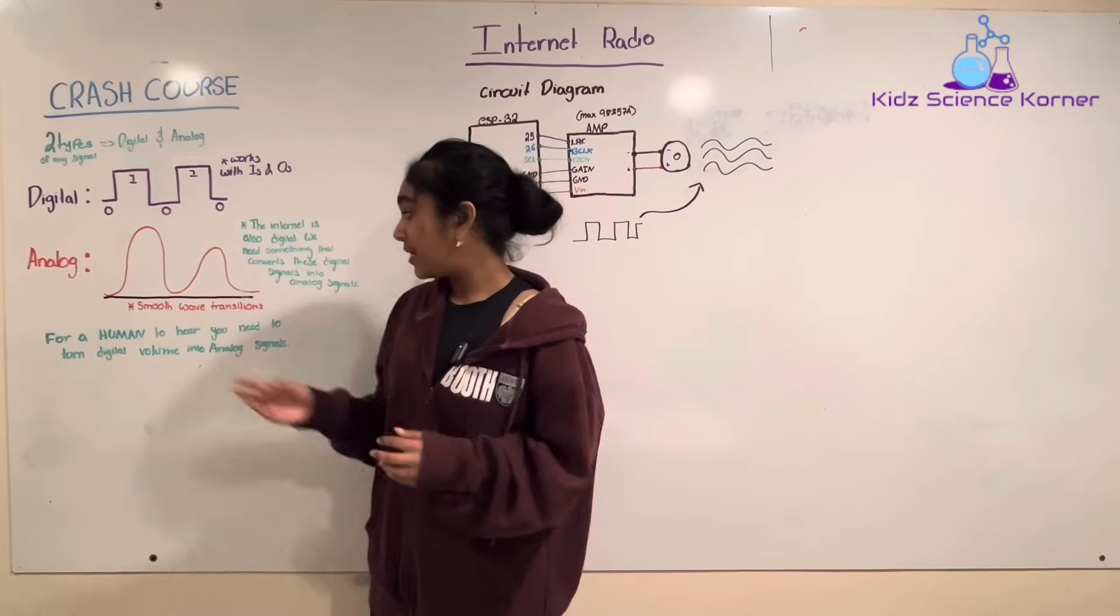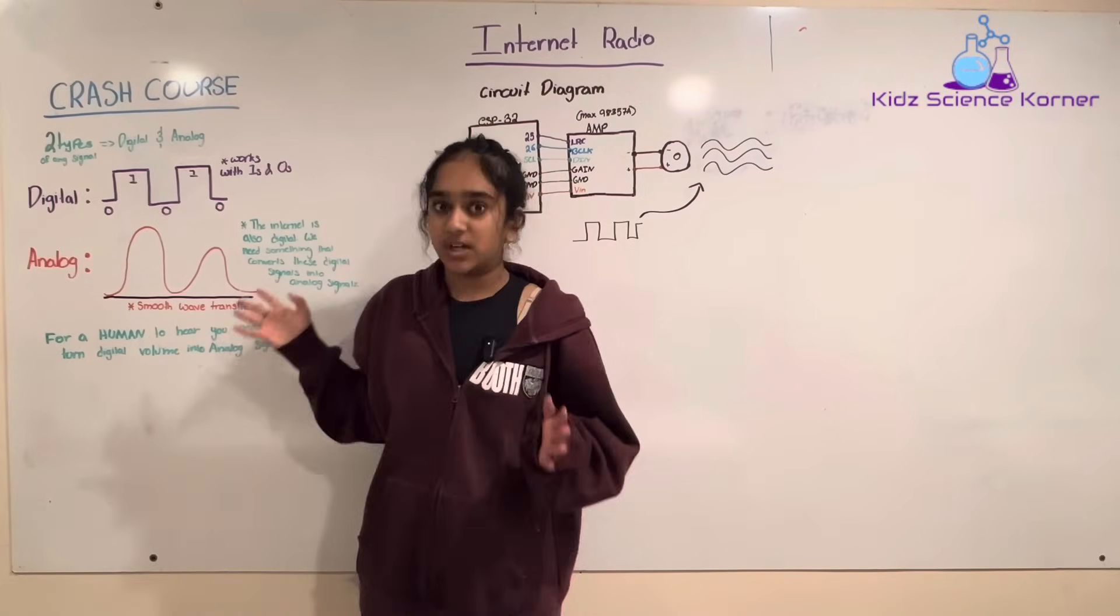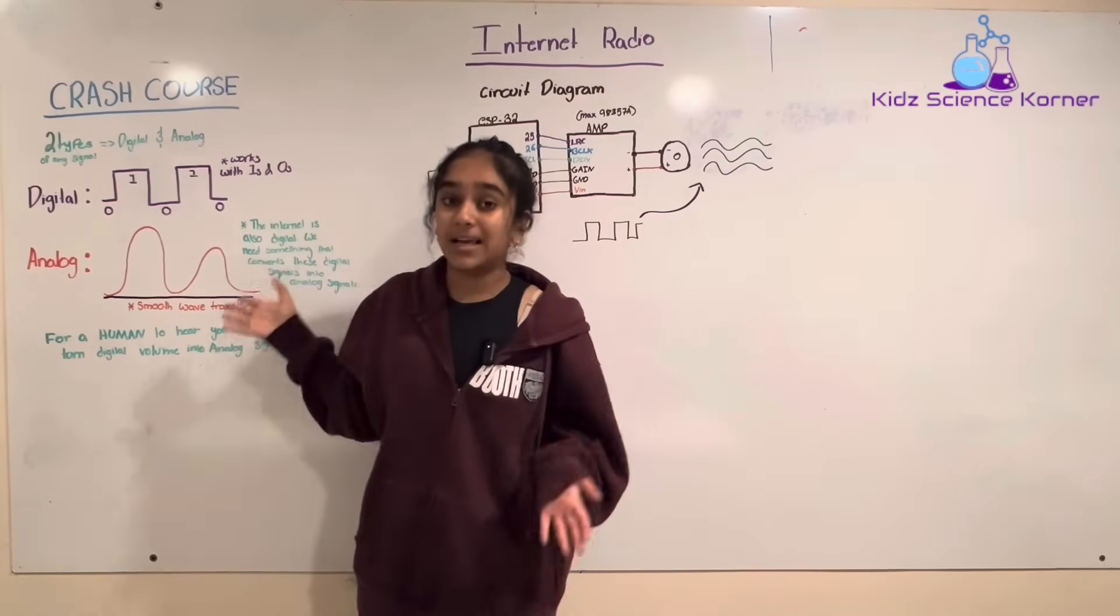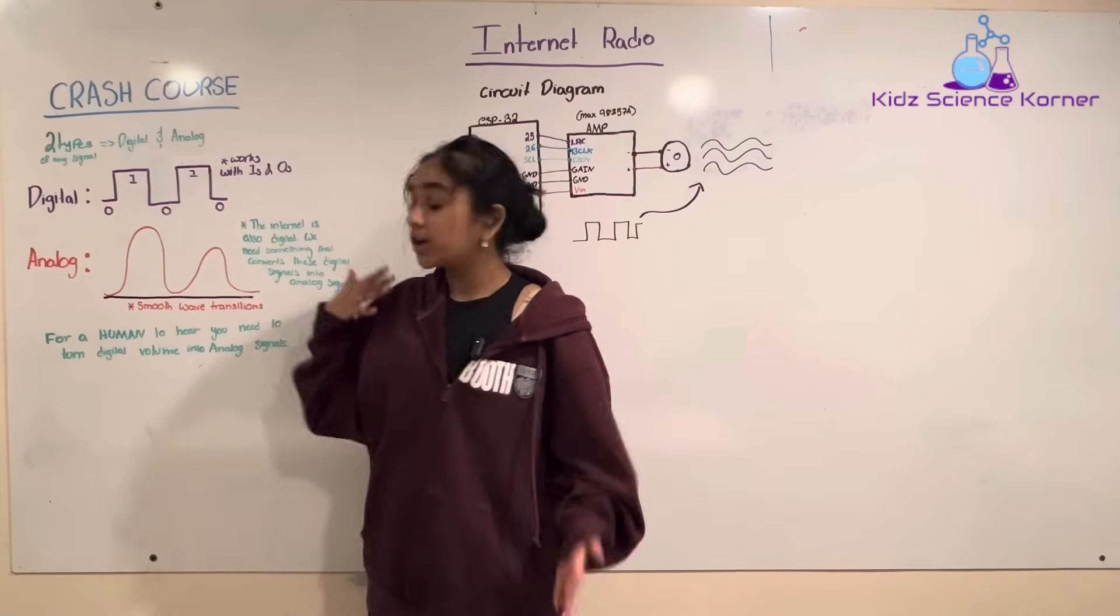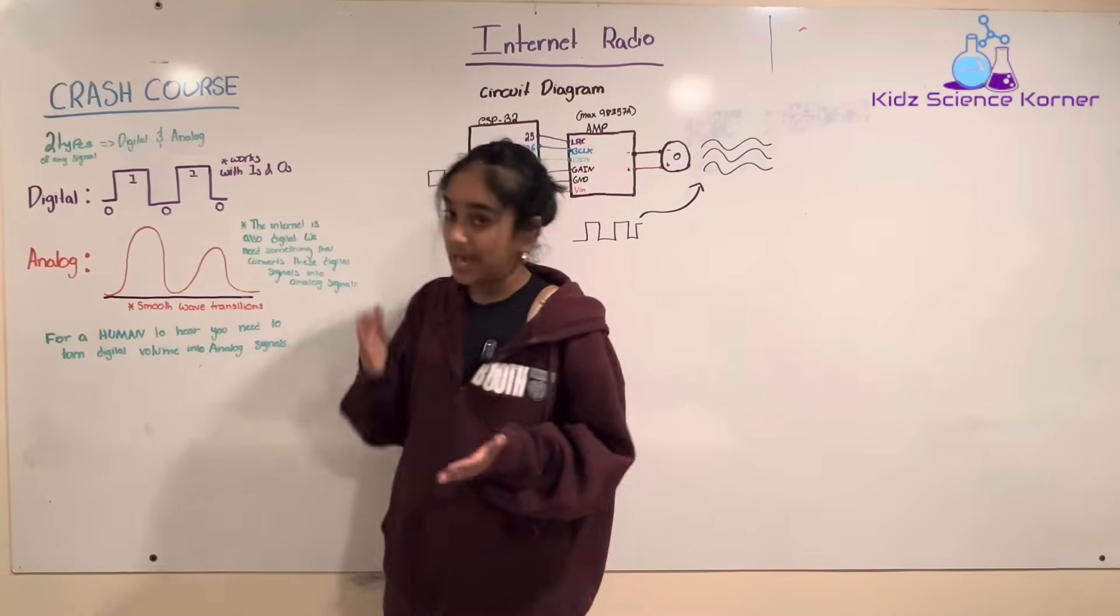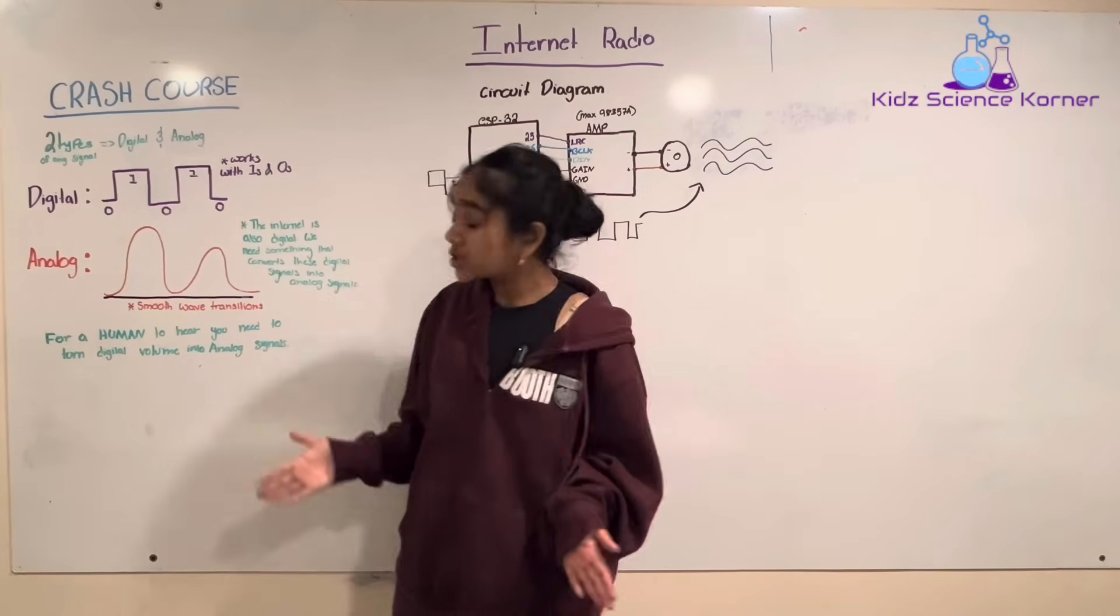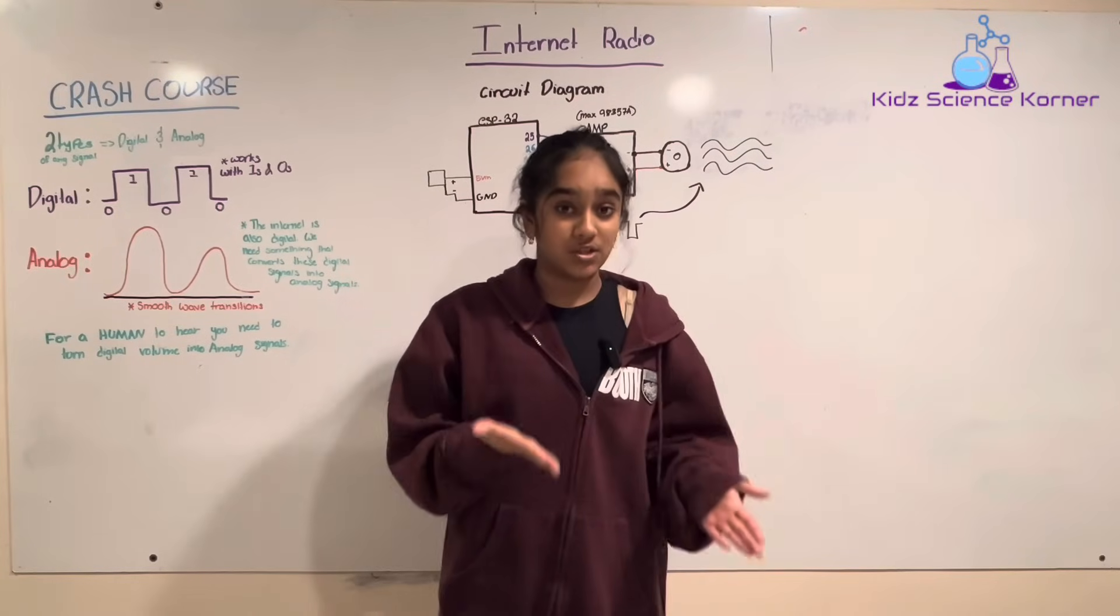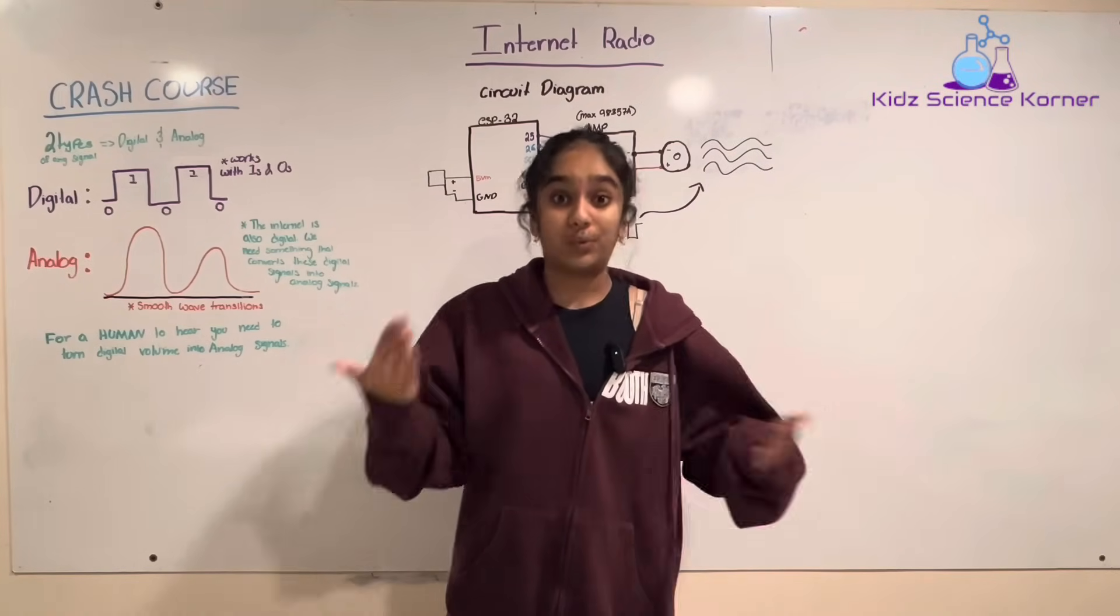And then there's analog signals. This is a smooth wave transition, as you can see in this graph, it's very smooth. And this is exactly how we can hear as well. So for a human to hear you, you need to convert these digital signals and digital volumes into analog signals. The internet is also digital, and we need something that converts those digital signals into analog signals so that we can hear them.